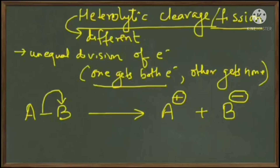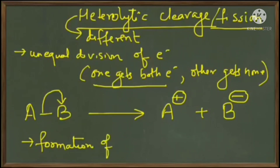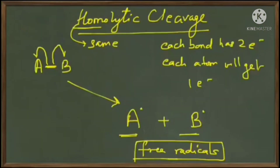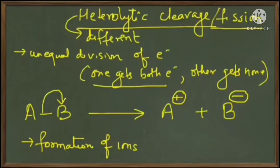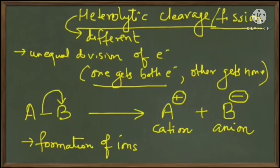So heterolytic cleavage leads to the formation of ions. If you remember, homolytic cleavage led to the formation of free radicals, but heterolytic cleavage leads to formation of ions. The ion with a positive charge is called a cation and that with a negative charge is called an anion.